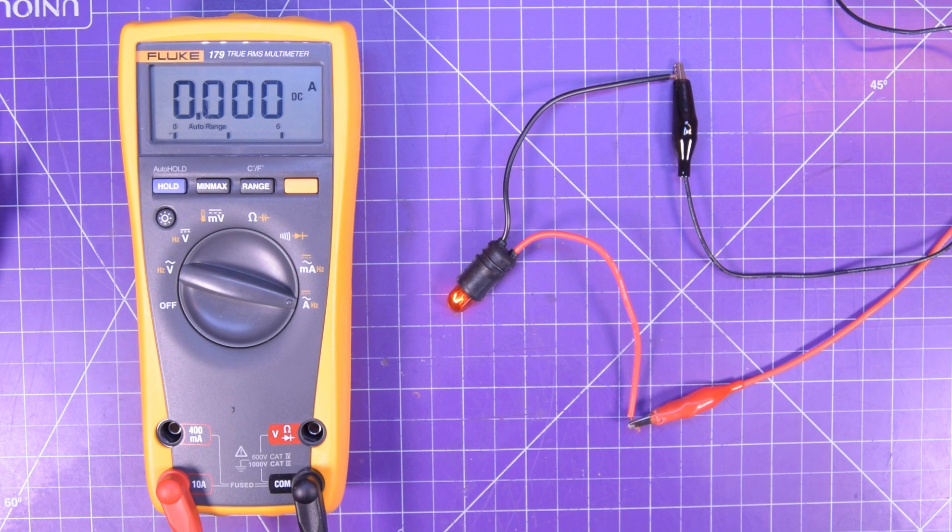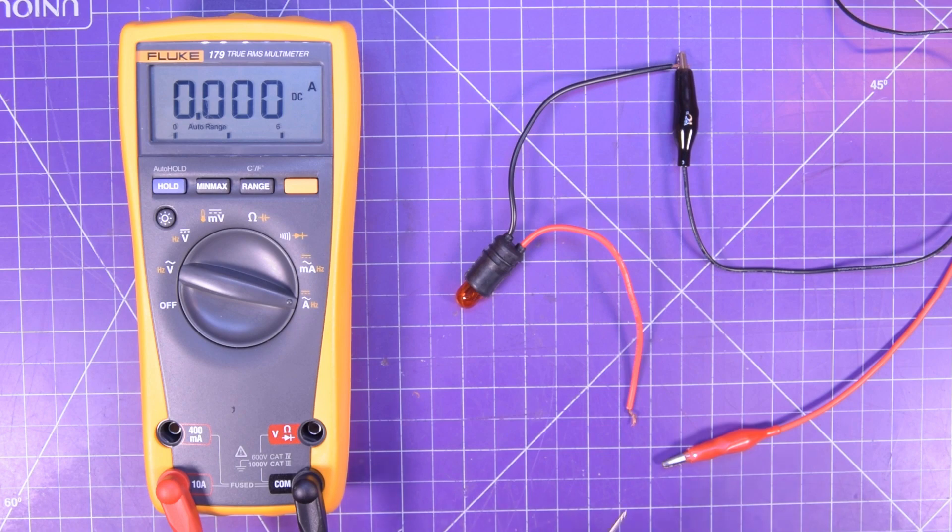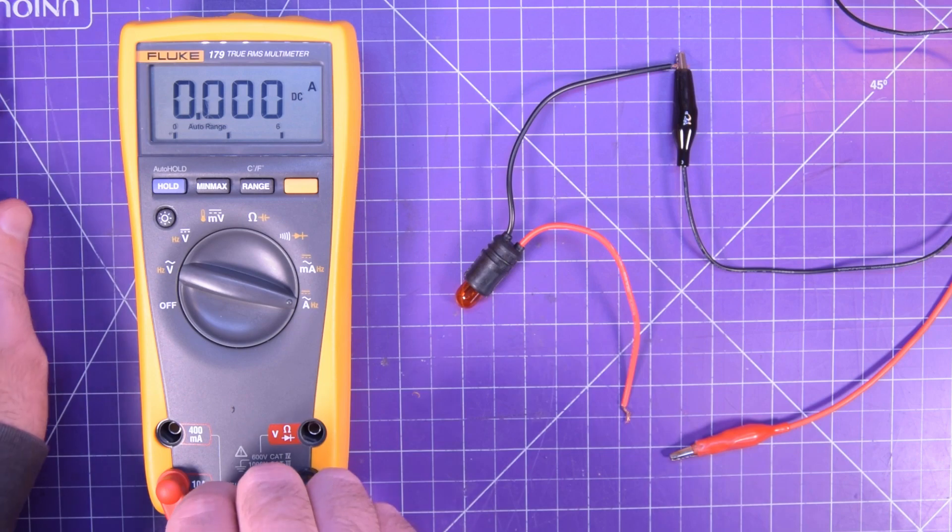So here we have a bulb lit up with an unknown voltage and an unknown current, and since I don't know what kind of current this thing is pulling, I have my red lead set into the 10 amp spot. Now to actually measure the current, all I have to do is break the circuit and insert my multimeter in series with the load. Looks like we have about 183 milliamps, that's 0.183 amps.